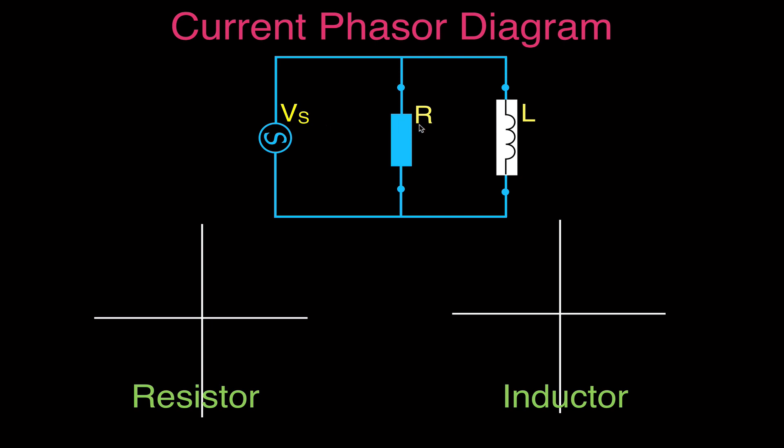Here we have an RL circuit with a voltage source, a resistor R, and an inductor L. They are in parallel, and therefore we have an RL parallel circuit.